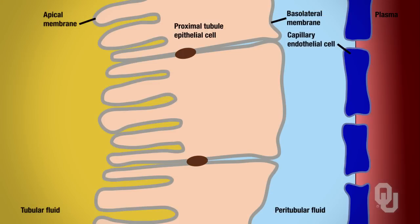Now we'll look at reabsorption in the proximal convoluted tubule. If you pay attention to the primary active transport on the basolateral membrane and think about the concentrations there, that should set you up to determine what the other types of transport are.